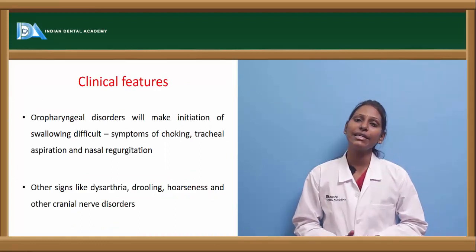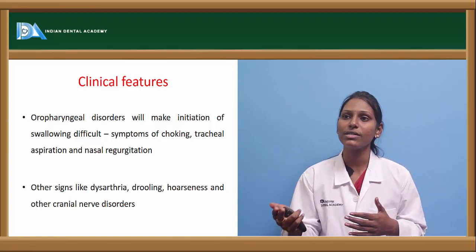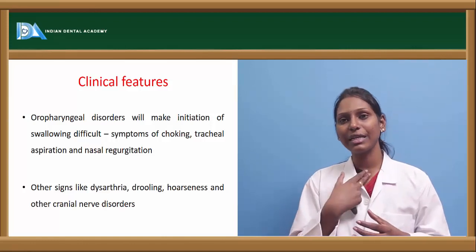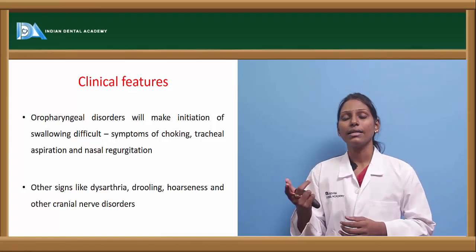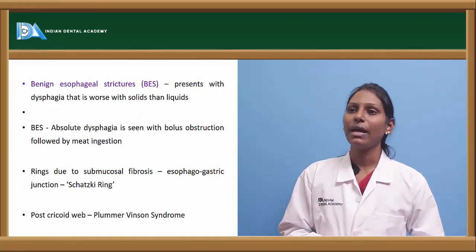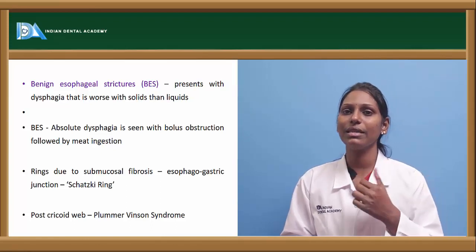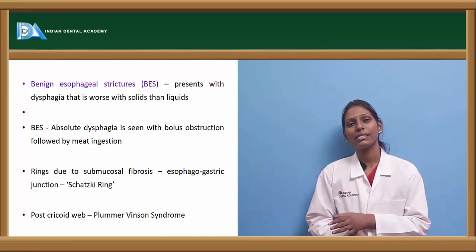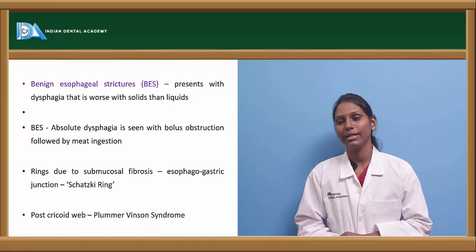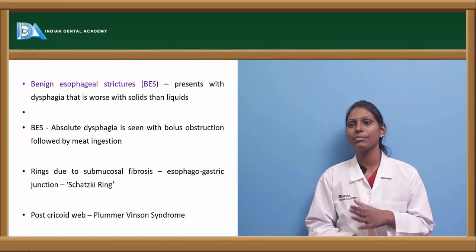Now coming to clinical features of dysphagia. The prime feature itself is difficulty in swallowing. Oropharyngeal disorders make initiation of swallowing difficult, and symptoms include choking, tracheal aspiration, and nasal regurgitation. Other signs include dysarthria, drooling, hoarseness, and other cranial nerve disorders. Benign esophageal strictures present with dysphagia that is worse with solids than liquids. As strictures progress in severity, even liquids become difficult to swallow, and absolute dysphagia can be seen with bolus obstruction following meat ingestion.